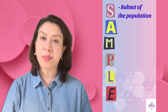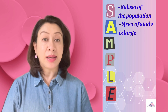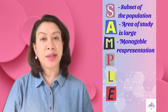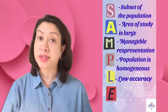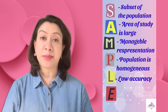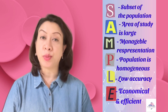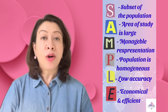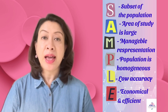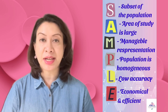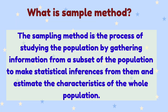Now let us use the acronym SAMPLE to understand more about the Sample method. A sample is a subset of the population under study. The Sample method of data collection is useful when the area of study is large. A sample is a manageable representation of this large population, and this method is applicable when the population is homogeneous. Sample method is suitable for research in which a high level of accuracy is not expected, and it is economical and effective as only some units of the population are studied. The sampling method is the process of studying the population by gathering information from a subset of the population to make statistical inferences and estimate the characteristics of the whole population.